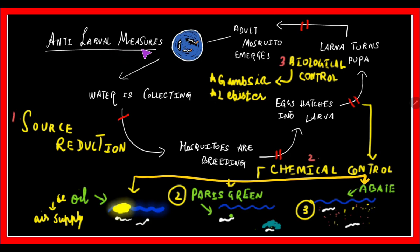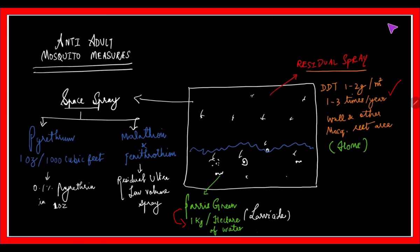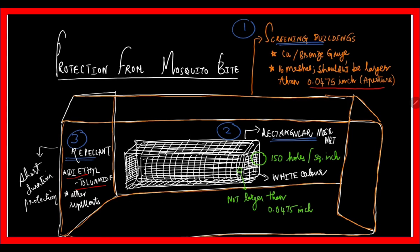To summarize, anti-larval measures include source reduction, mineral oil, Paris green, synthetic insecticides like abate and fenthion, and biological control with Gambusia and Lebistes fish. Anti-adult measures include space spraying with pyrethrin and residual spraying with DDT. Protection from mosquito bites uses screening buildings, mosquito nets, and repellents. Thank you so much for your patient listening.